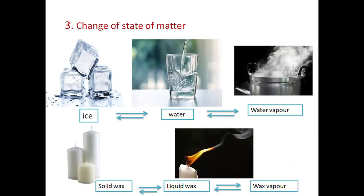The third effect of heat is change of state of matter. If we take ice cubes and supply heat, ice turns to water, then water turns to water vapour. This is reversible: removing heat from water vapour turns it back to water, and removing more heat turns water to ice. Similarly, solid wax heated becomes liquid wax, then wax vapour; removing heat reverses the process back to solid wax.